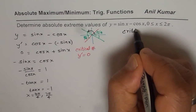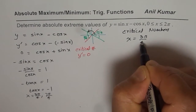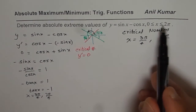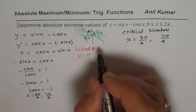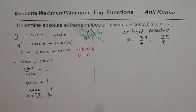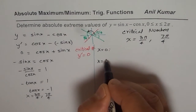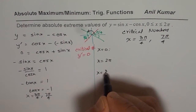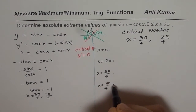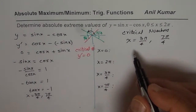We get the critical numbers x equals 3 pi by 4 and 7 pi by 4. Now let us find the value of the function at the critical numbers and at the boundary. We will evaluate using the calculator the values at x equals 0, x equals 2 pi (the boundary), x equals 3 pi by 4, and x equals 7 pi by 4. We then compare the results to find the absolute maximum and absolute minimum.